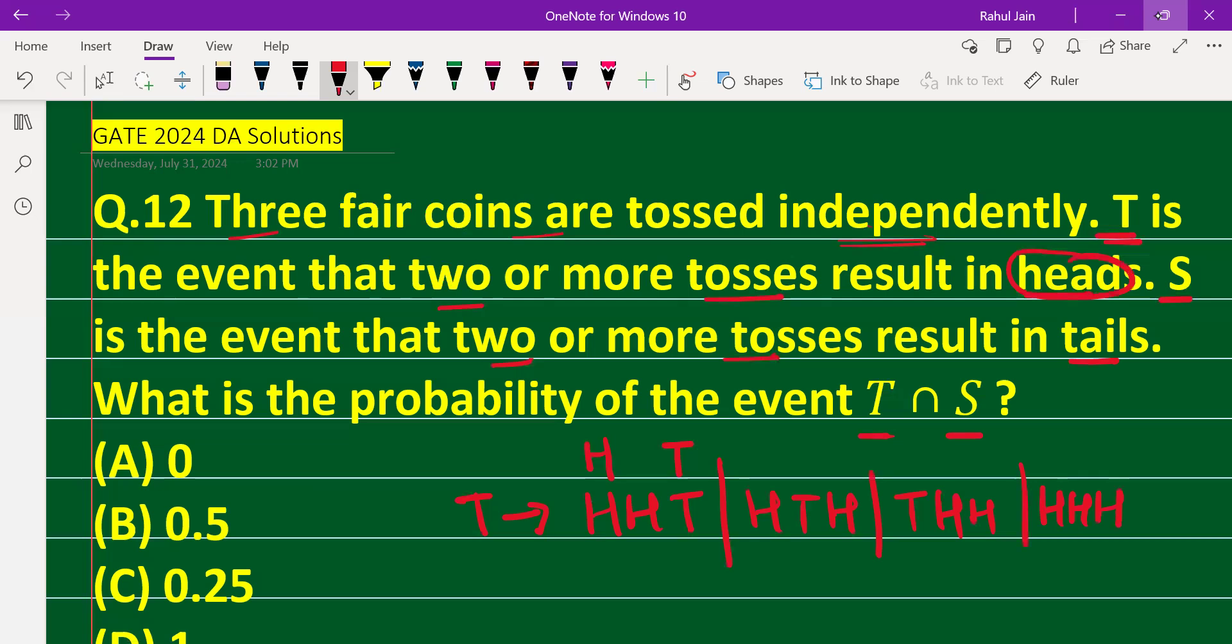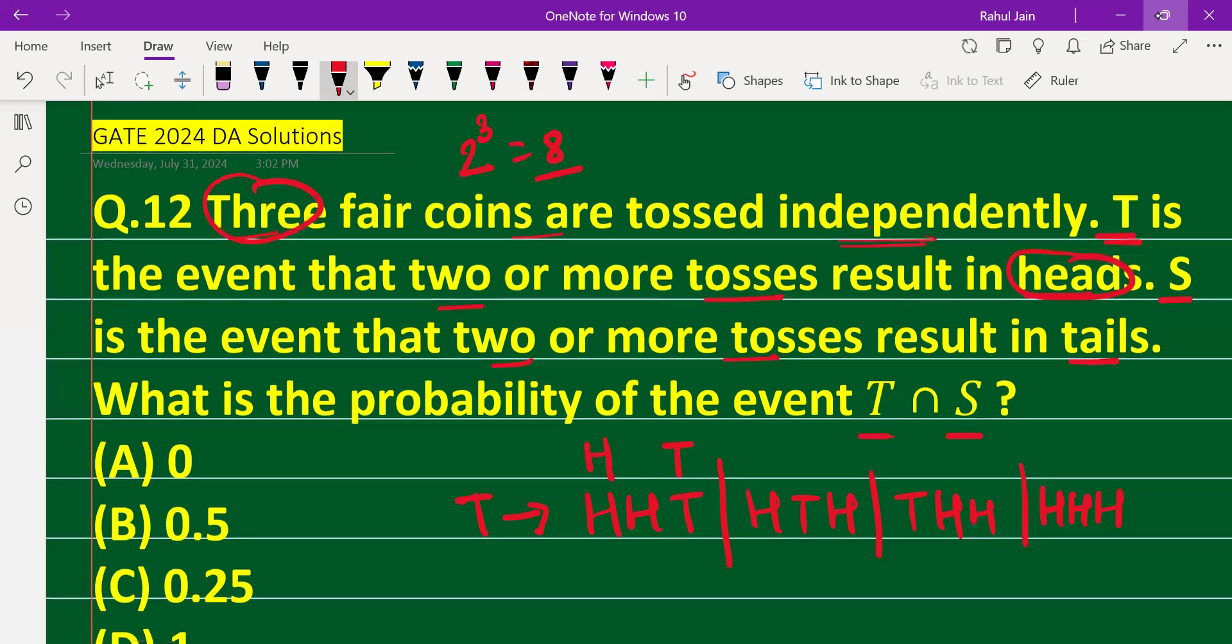For two or more heads, if we toss three fair coins, there are 2³, that is eight total outcomes, and out of eight, four possibilities are associated with event T.